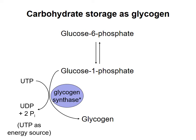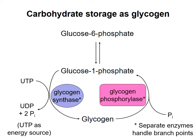Glycogen synthase makes alpha-1,4 linkages between glucose monomers. A separate enzyme handles making the branch points in glycogen, but for simplicity I'm not going to talk about that enzyme. When the liver or muscle cell wants to break glycogen down to produce monosaccharides, an enzyme called glycogen phosphorylase uses a phosphate ion from solution to remove glucose from the polymer as G1P. G1P is then converted to G6P. As with glycogen synthesis, branch points are handled by a separate enzyme that I'm not going to discuss.